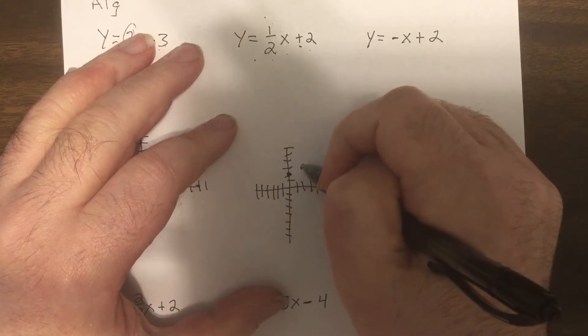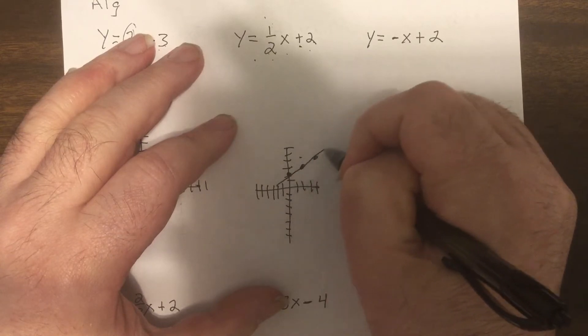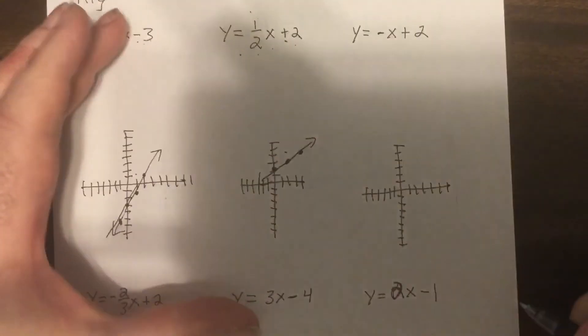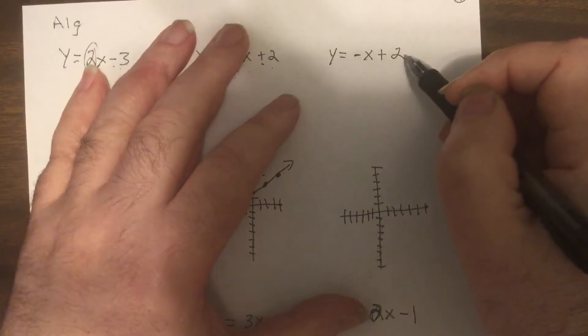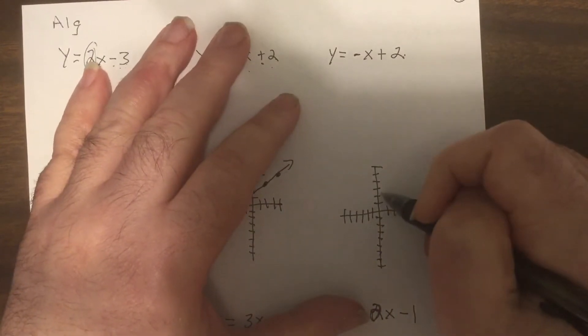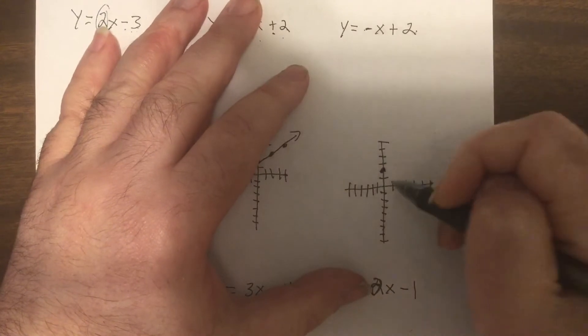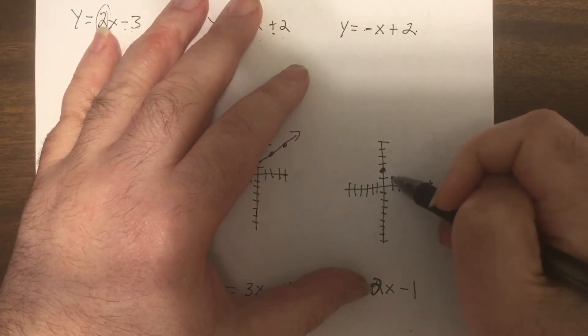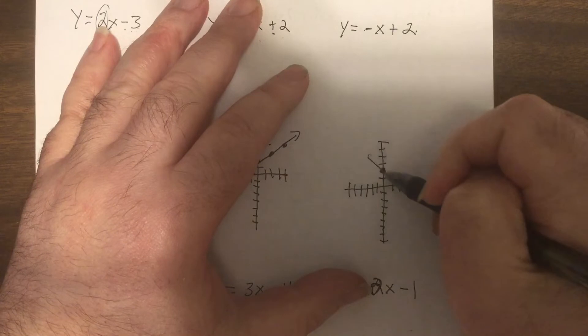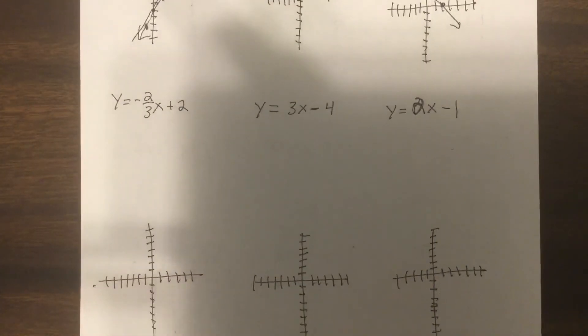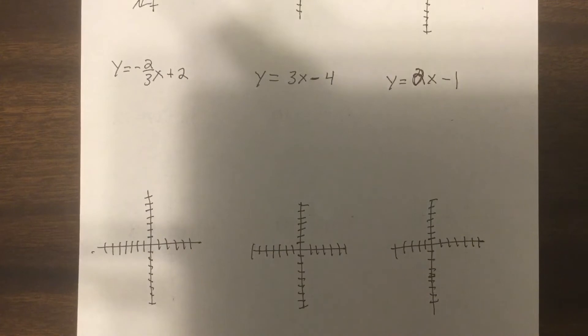So the last one again, the y-intercept's at two, so I put a dot at two. The slope is negative one, so it'd be down one right one, down one right one, connect it. So I want you to do these three for me, see if you're on the right track, and then freeze the video, turn it back on and I'll do them.